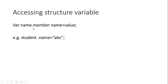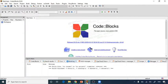If you want to access any structure variable, you write: variable_name.member_name = value. For example, if my variable is 'student' and the member name is 'name', I write student.name = value. In this program we will define a structure, declare it, declare its members, and then print them.